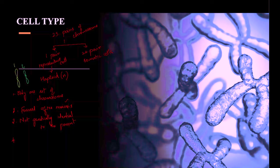Haploid cells are found in gametes, which are also called sex cells. These haploid cells play a very important role in sexual reproduction, as they are gametes.